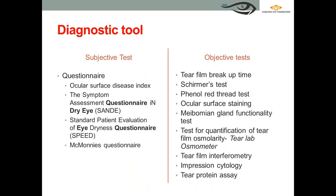Diagnostic tools can be subjective or objective. Subjective tools include self-assessment questionnaires such as the Ocular Surface Disease Index (OSDI), SPEED, McMonnies, and others. Some questionnaires are suited for measuring environmental or occupational conditions, while others are better for contact lens-induced dryness. Practitioners should choose questionnaires that suit their practice setting.